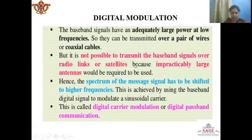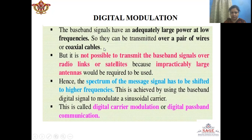In Digital Modulation, the message signal is superimposed on a high-frequency carrier signal for transmission. The baseband signal, which is also called message signal, has large power at low frequencies, so it can be easily transmitted over a pair of wires or coaxial cables. But it is not possible to transmit the message signal of low frequency over radio links or satellites, because in that case larger antennas would be required. Hence, the spectrum of the message signal should be shifted to higher frequencies, and this is achieved by using the high-frequency sinusoidal carrier.